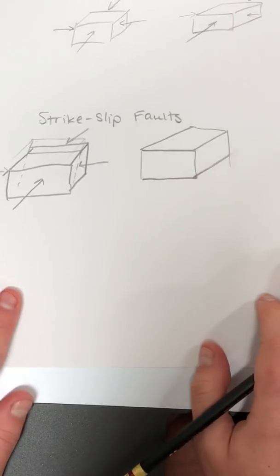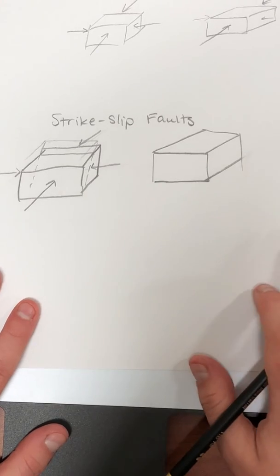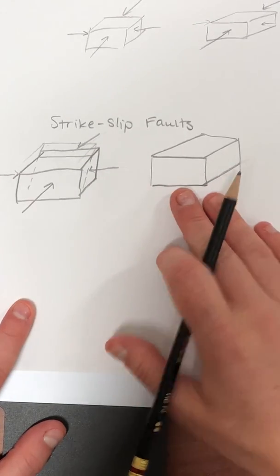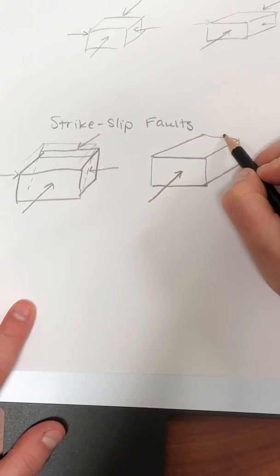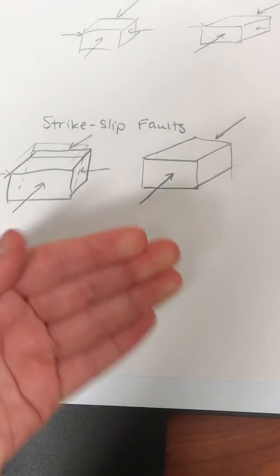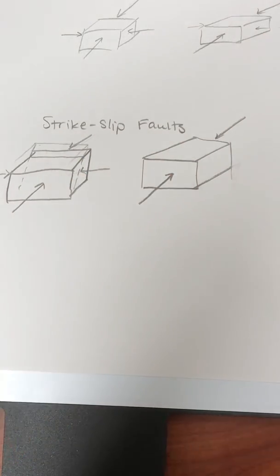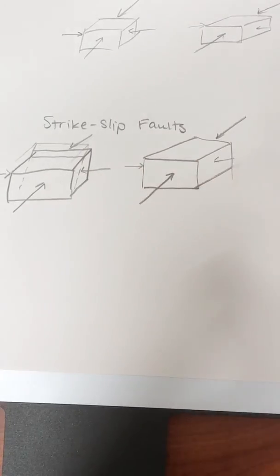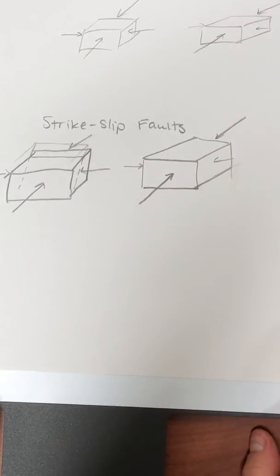In a strike-slip fault though, we're dealing with something that shares some similarities but it also has some differences to a thrust fault. So in this situation, I also want you to pretend that we're kind of confining the block or pushing it this way. But this time, we're gonna make these forces on the side, this pushing on the side, pretty small relative to this.